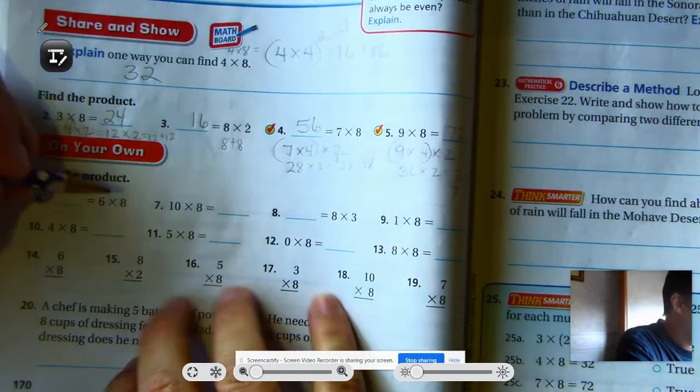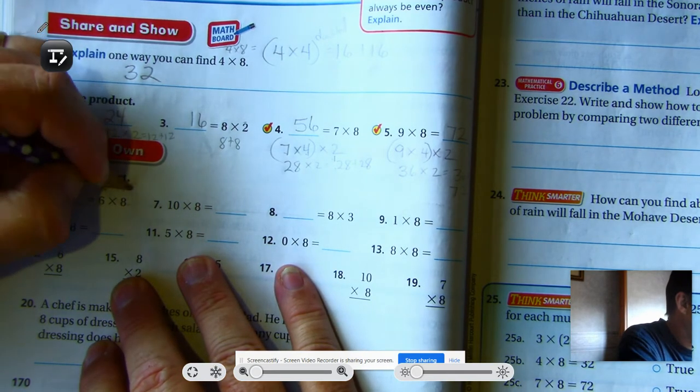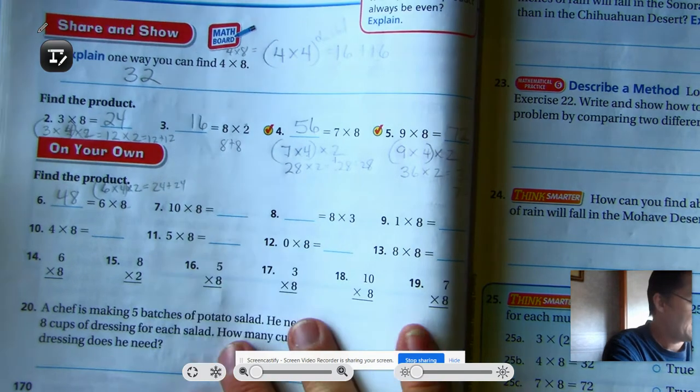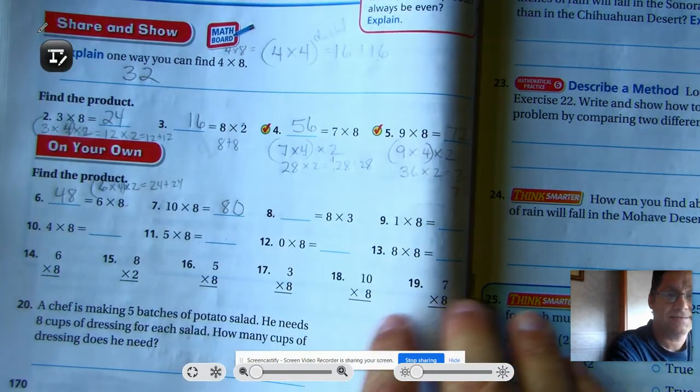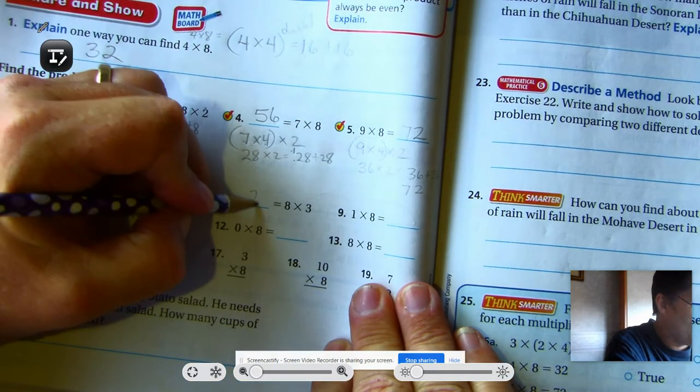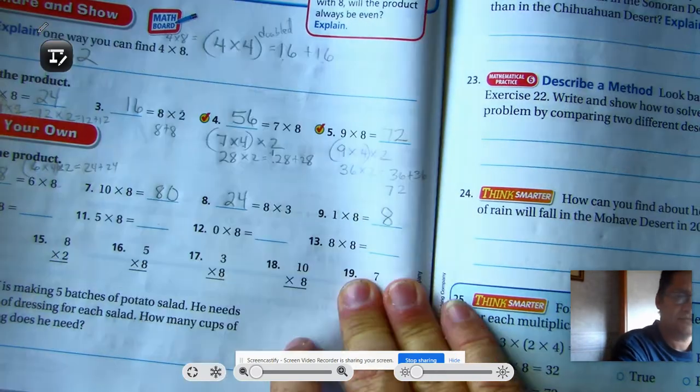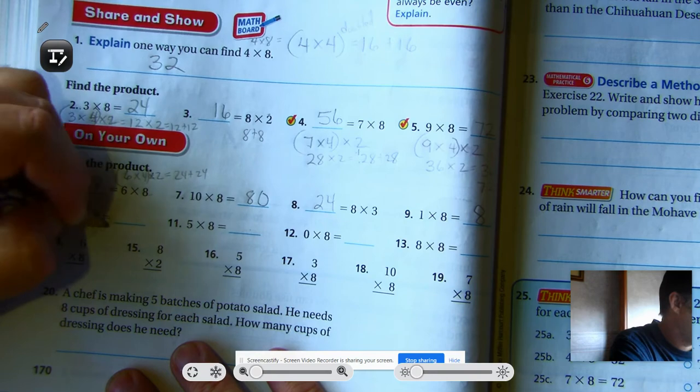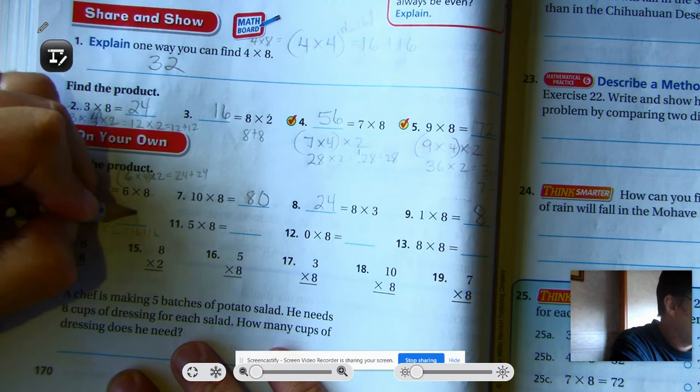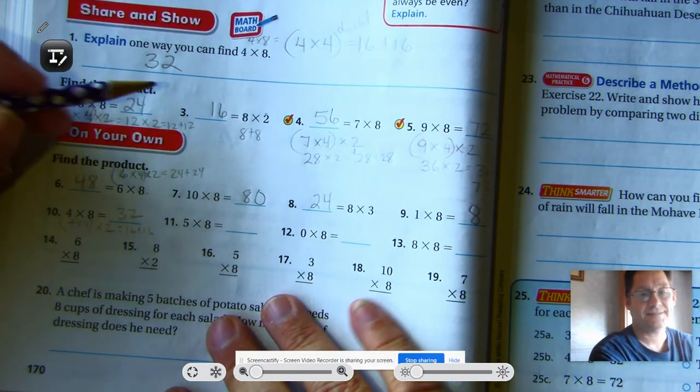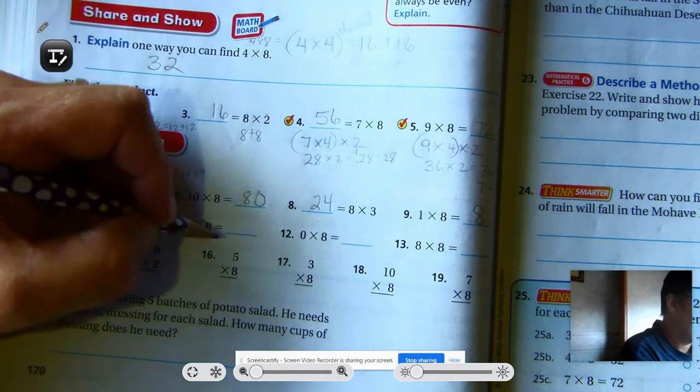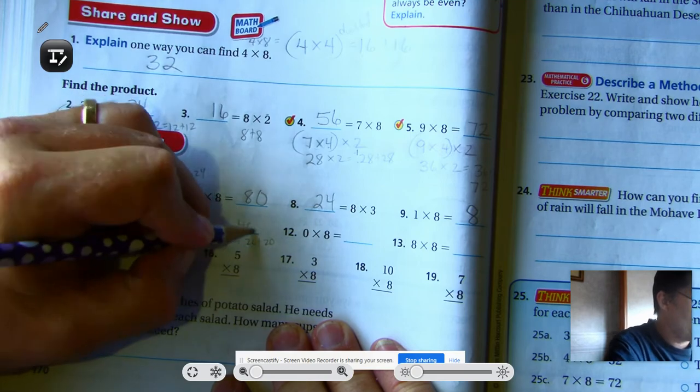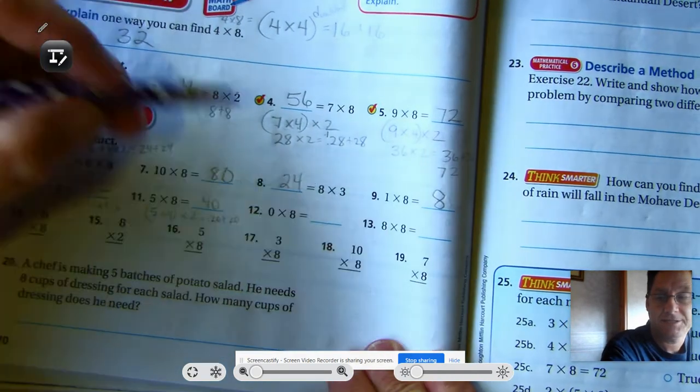We can write this as nine times four times two. Use the associative property. Nine times four is 36 times two. 36 plus 36 is 72. Number six. Six times eight is the same as six times four doubled. So 24 plus 24 is 48. Eight times ten. I know it has to end in a zero. So 80. Eight times three. We actually solved that. That's 24. One times eight is the identity property of multiplication. So that's just eight. Zero times eight is the zero property of multiplication. So it's zero.